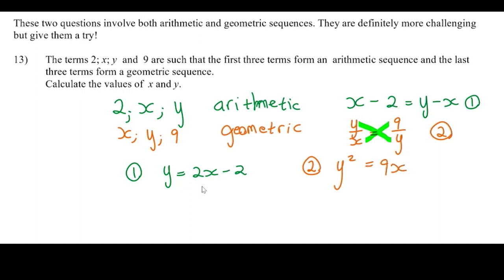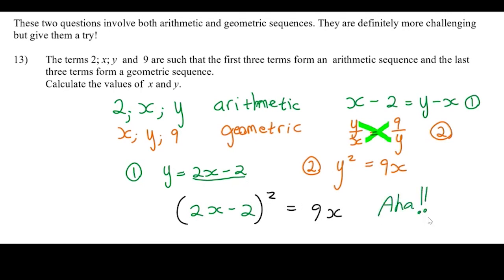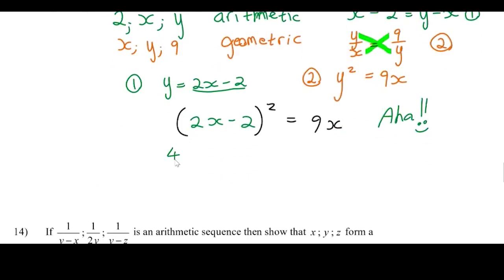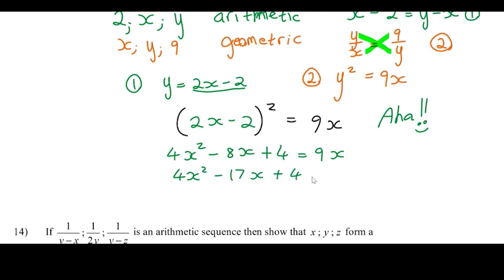Now we solve simultaneously by substituting y = 2x − 2 into y² = 9x. We get (2x − 2)² = 9x. Expanding: 4x² − 8x + 4 = 9x. Subtracting 9x from both sides gives the quadratic 4x² − 17x + 4 = 0.